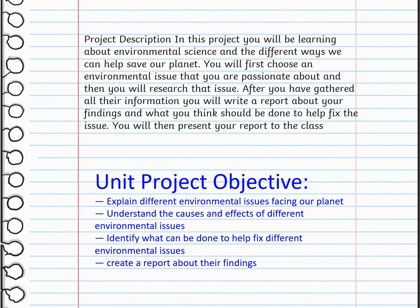You will be having a project. In this project, you will learn about environmental science and the different ways we can help save our planet. You will first choose an environmental issue you are passionate about, research that issue, and write a report about your findings and what you think should be done to help fix the issue. You will also present your report to the class. The main objectives are to explain different environmental issues facing our planet, understand cause and effect, identify what can be done, and create a report about your findings. This is a very important unit, and I really hope that you enjoy. Thank you so much.